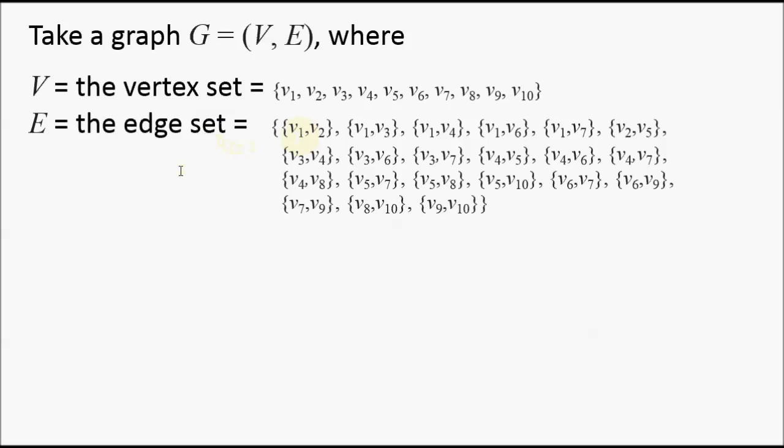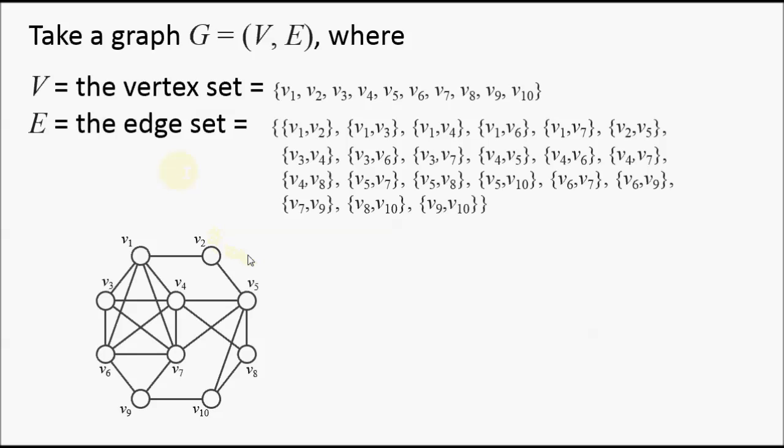Now graph coloring and graph theory in general is quite a visual subject, so it's often easier just to draw the vertices on a page in some way, and then use lines to draw the edges between vertices. So vertex 1 to vertex 2, this edge is denoted by this line here.